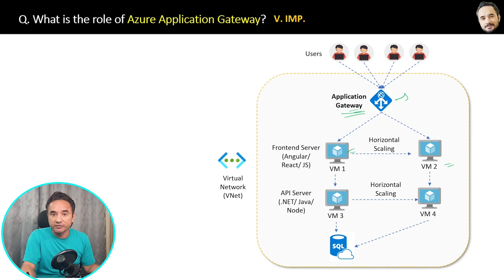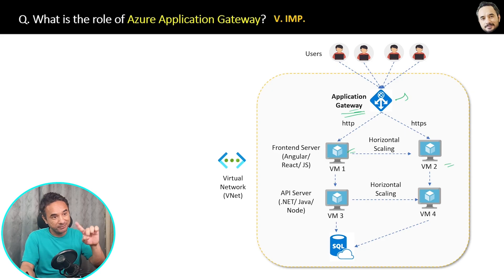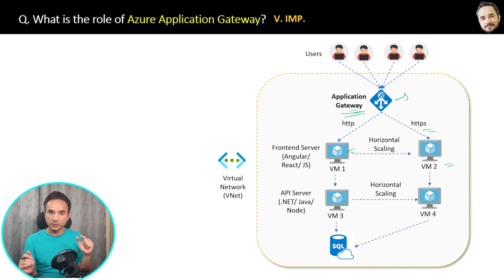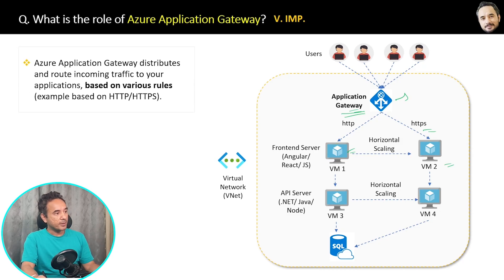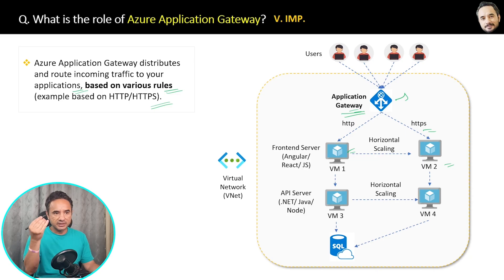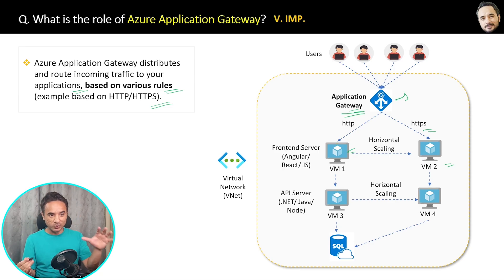For example, inside Application Gateway you can define a rule that all HTTP requests go to VM1 and HTTPS requests go to VM2. Application Gateway is rule-specific, whereas Load Balancer is traffic-specific — you do not have to define any rules for Load Balancer. The simple definition: Azure Application Gateway distributes and routes incoming traffic to your application based on various rules, such as HTTP/HTTPS.